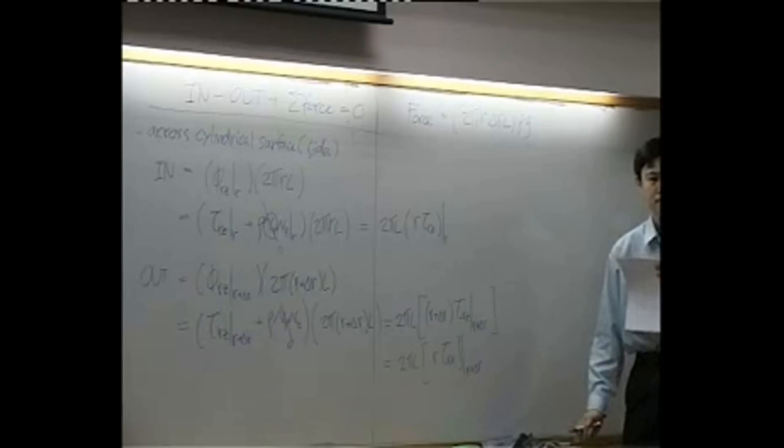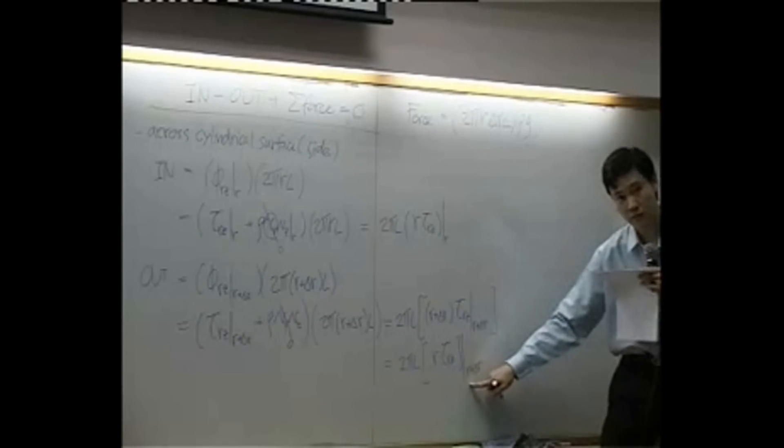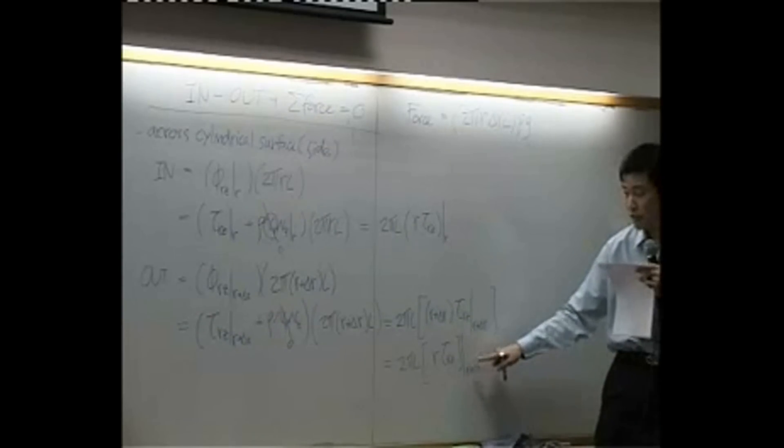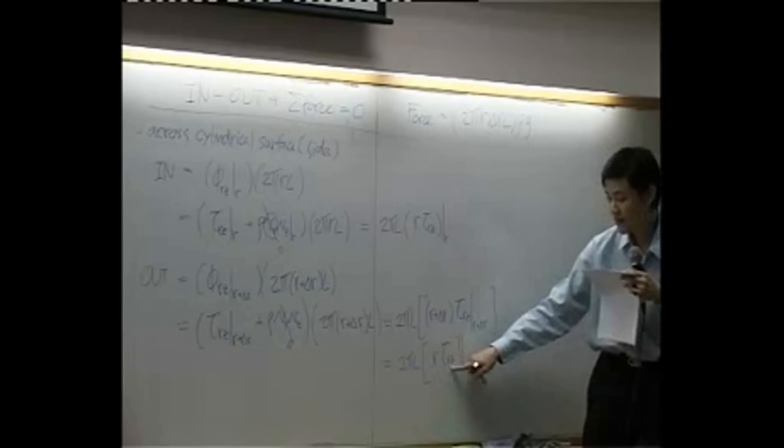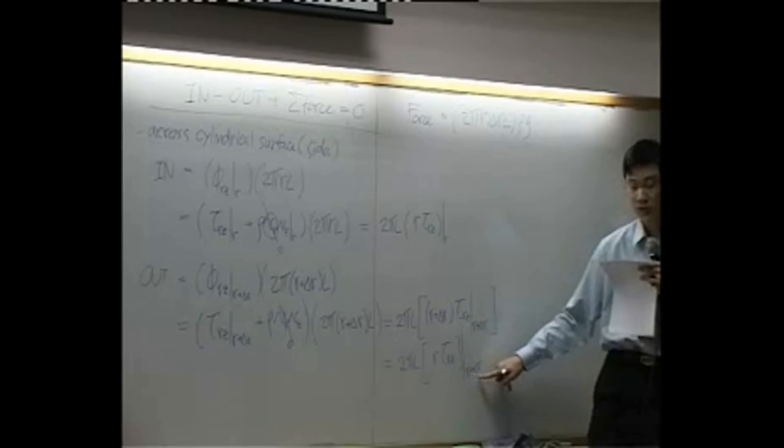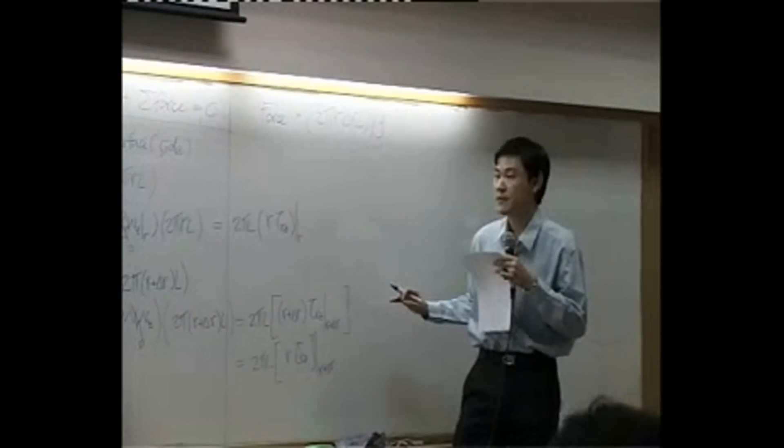Can I write something like this? Yes, this is correct. For the second term, 2πL remains the same, but the rest would be R plus δR and τ_rz at R plus δR. Then I'm going to write something like this. Can I do that?